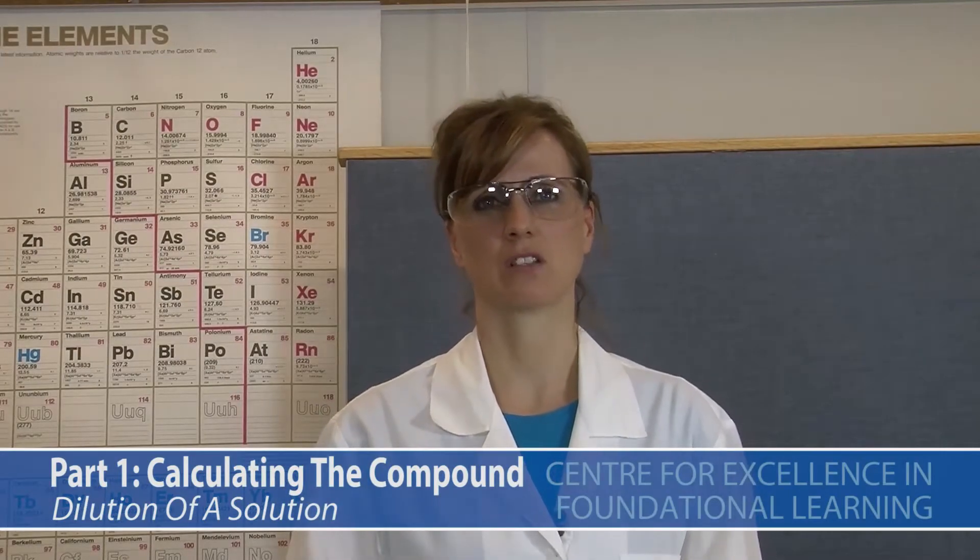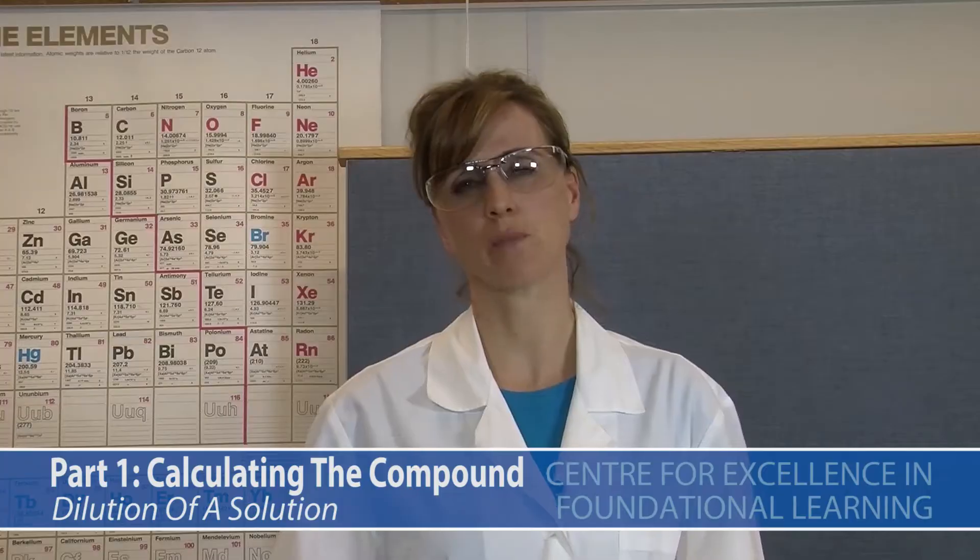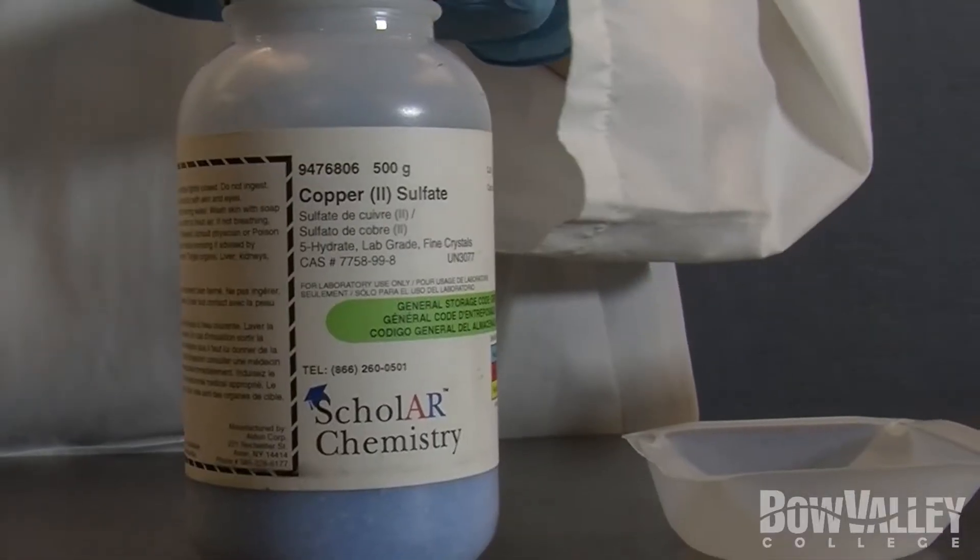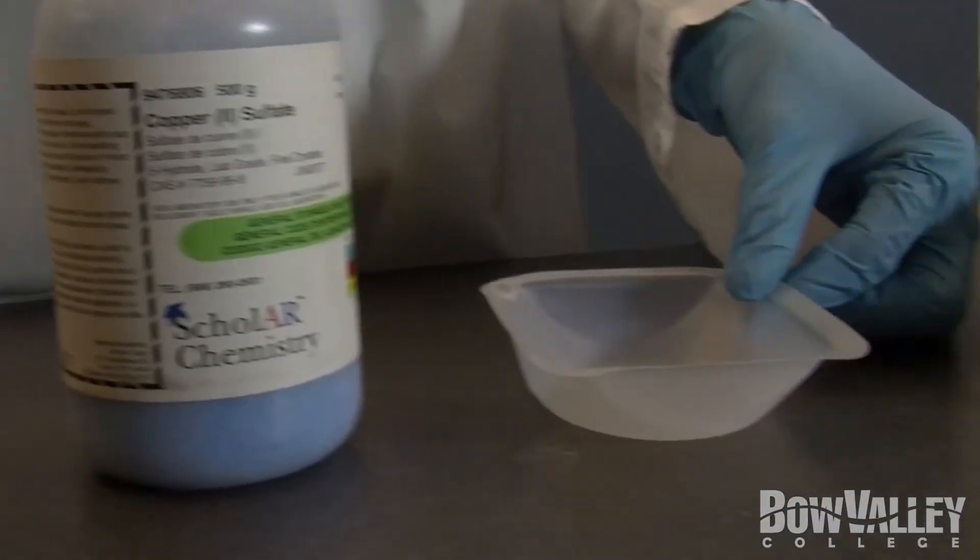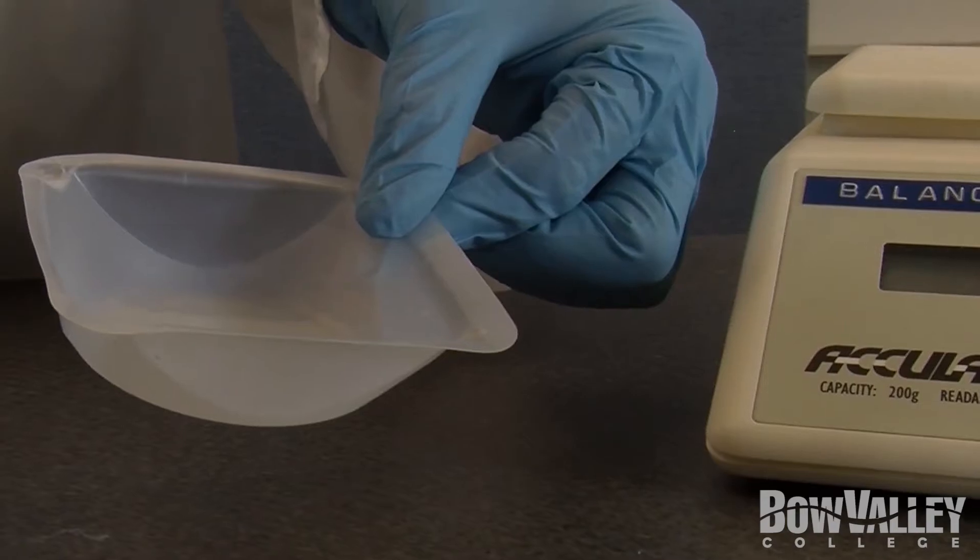We need to calculate how much copper(II) sulfate pentahydrate is needed to make the solution. I've done the calculation already and we need 6.2 grams. These are the things we're going to use: copper(II) sulfate pentahydrate, a scoopula, weighing dish and a scale.